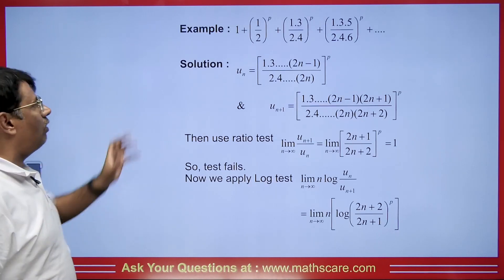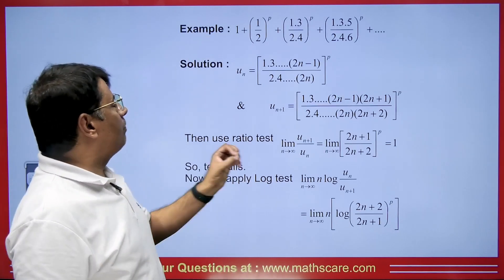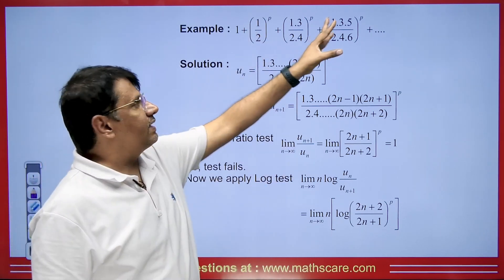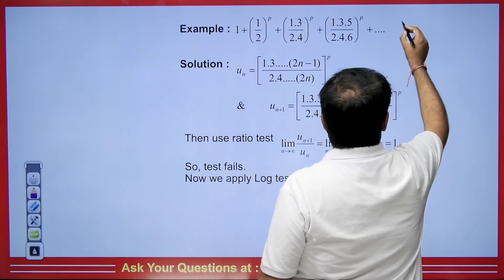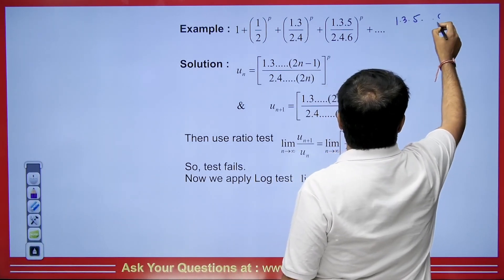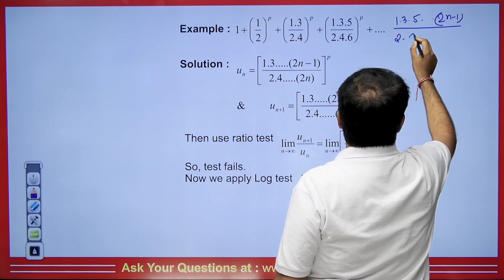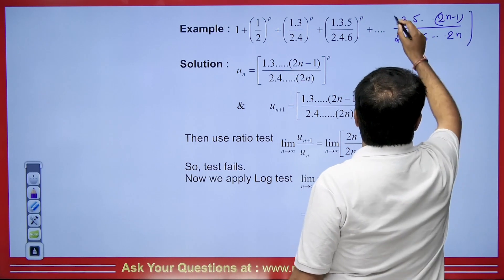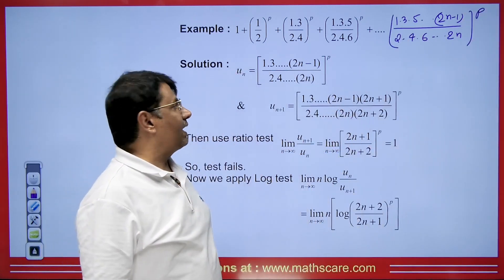I will explain through an example. We have the infinite series: 1 + (1/2)^p + (1·3/2·4)^p + ... The nth term of the series will be [1·3·5·...·(2n−1)] / [2·4·6·...·2n] raised to the power p. What is the power here? It is p.